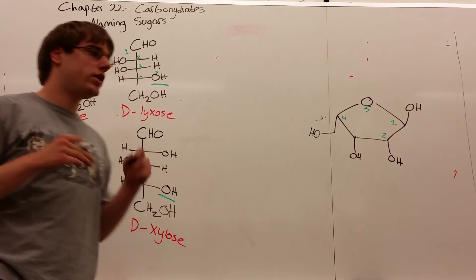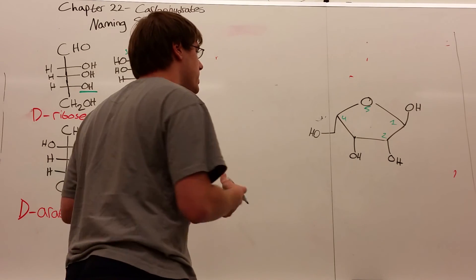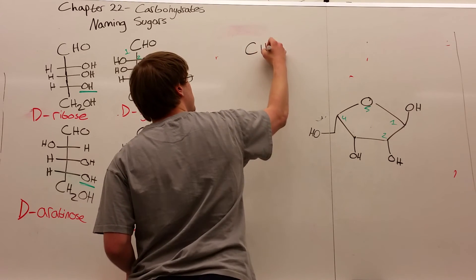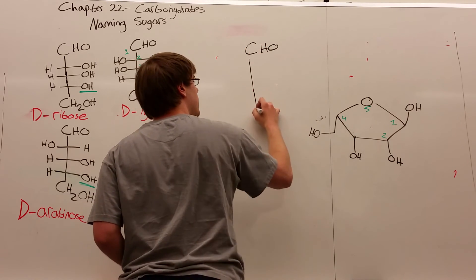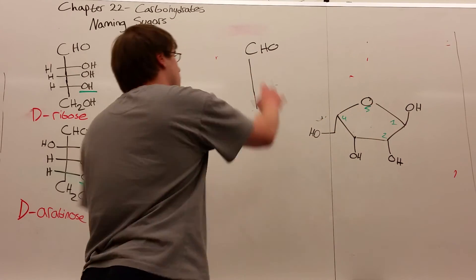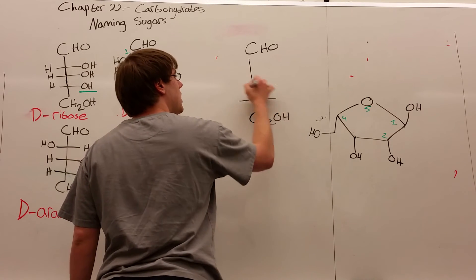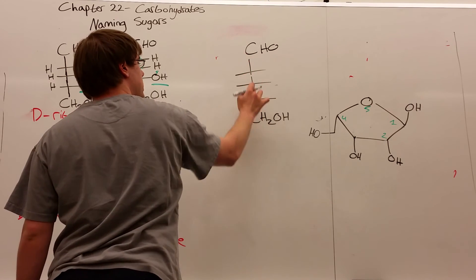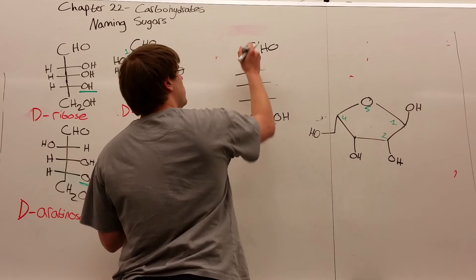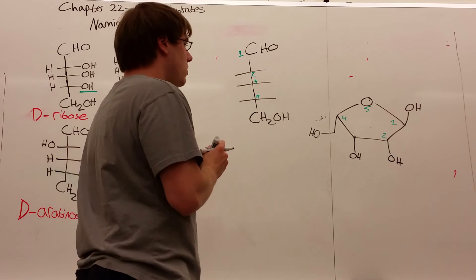When trying to name a Haworth projection, always draw the Fischer projection first. It's a five-membered carbon chain. It's an aldose because carbon 1 only has an OH, not a CH2OH. So it's CHO on top, CH2OH on bottom—five carbons total: 1, 2, 3, 4, 5. Carbon 1 doesn't have stereochemistry because it's a CHO group.